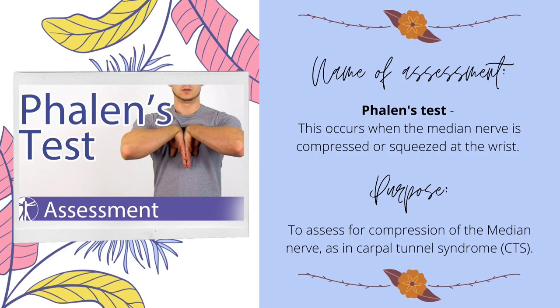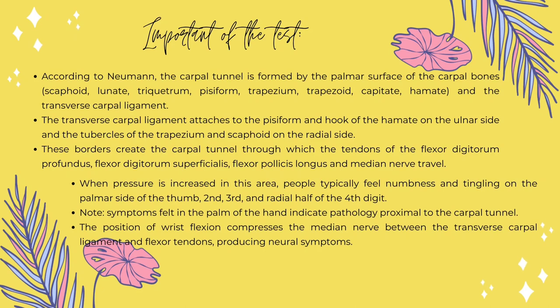Here is the major section of this GLS. The Valen test is a provocative test used to diagnose CTS, which occurs when the median nerve is compressed or squeezed at the wrist. The purpose of this test is to assess for compression of the median nerve as in CTS. The palmar surface of the carpal bones as well as the transverse carpal ligament form the carpal tunnel. The pisiform or hook of the hamate on the ulnar side and the trapezium tubercle as well as scaphoid on the radial side are where the transverse carpal ligament is attached. Hence, the tendons of the flexor digitorum profundus, flexor digitorum superficialis, flexor pollicis longus and the median nerve travel through the carpal tunnel formed by these borders.